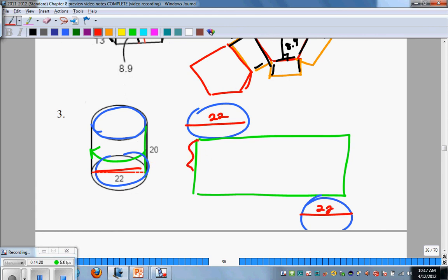So that would be the net here. Our diameter of the circles would be 22, and the width of the can, or the width of the label which is also the height of the can, would be 20. So those would be nets of those solids.